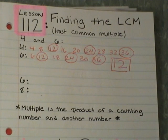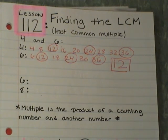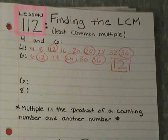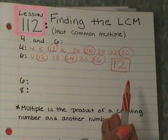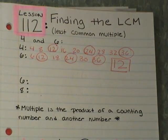Alright, one more. These lessons have been shorter lately, but we'll be practicing this strategy in class a ton. So we're going to do the same thing — find the least common multiple for 6 and 8. I need to write all the multiples of 6 out first, then all the multiples of 8, and find the smallest one they have in common.